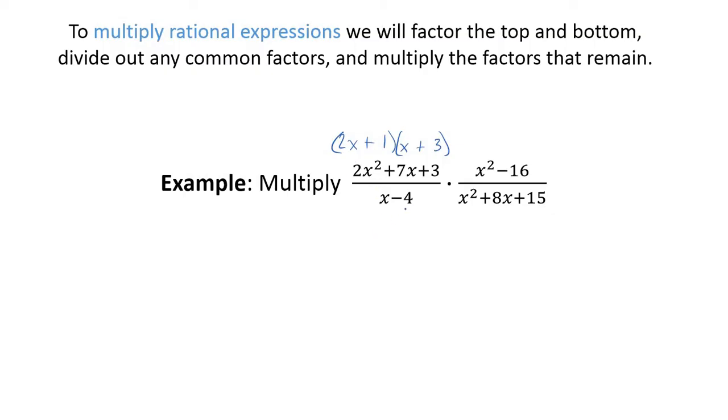Now, x minus 4 is already as simple as it gets. x squared minus 16, difference of 2 squares. So x plus 4, x minus 4. 4 times negative 4, negative 16. Of course, they add to make 0. We don't see a middle term there. This guy, factors of 15 add to make 8. Well, that's going to be 5 and 3. And so x plus 5, x plus 3. All right. We factored everything.